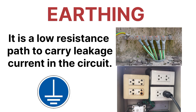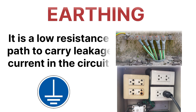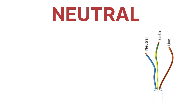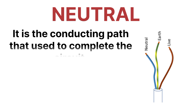Here you can see in the image the symbol for earthing. Now let's talk about what is neutral. Neutral is a purely conducting path that is used to complete the circuit in the system.